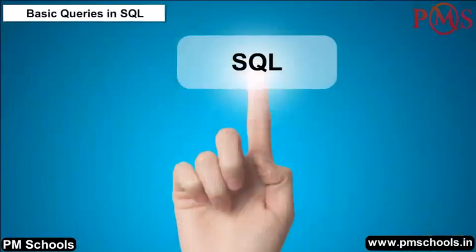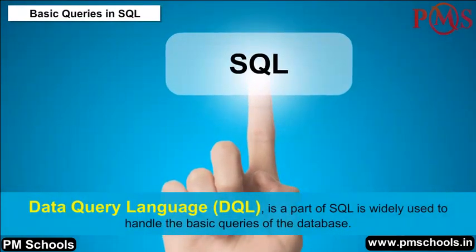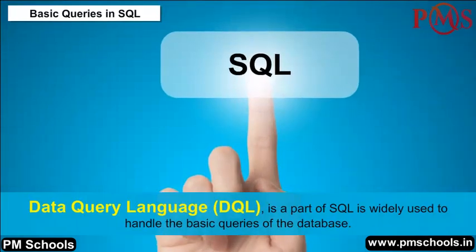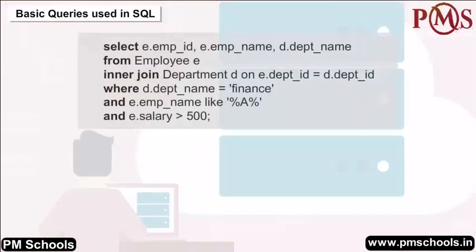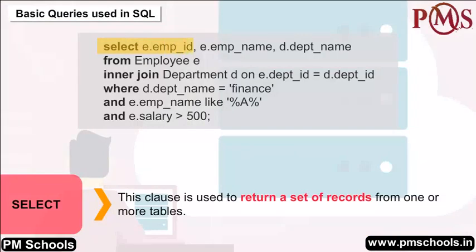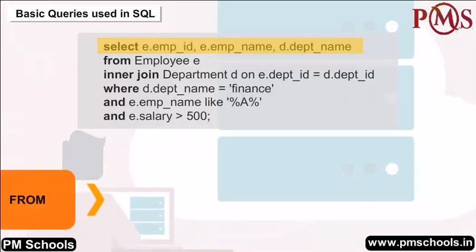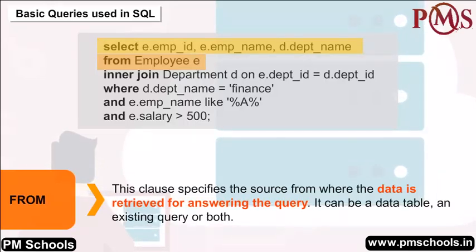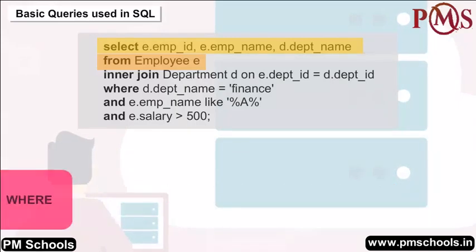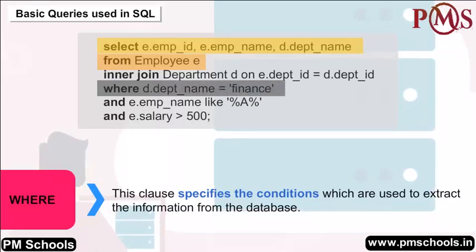Basic Queries in SQL: Data Query Language (DQL) is a part of SQL widely used to handle basic database queries. The basic clauses used in SQL are: SELECT — returns a set of records from one or more tables; FROM — specifies the source from where data is retrieved, which can be a data table, an existing query, or both; WHERE — specifies the conditions used to extract information from the database.